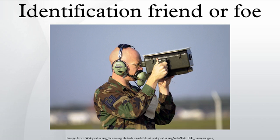Unfortunately for the Germans, British military scientists designed and built their own IFF transmitter called Perfettos, which was designed to trigger a response from any FUG-25A system in the vicinity. When mounted in an RAF Mosquito, the Perfettos device revealed the position of any German night fighters fitted with a FUG-25A. As a result, the British Perfettos device severely compromised German use of the FUG-25A.